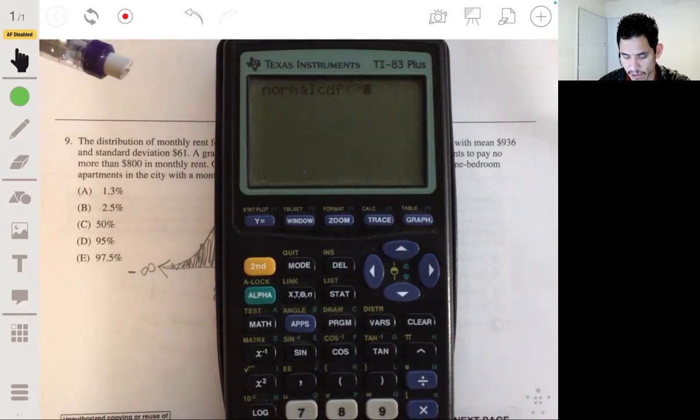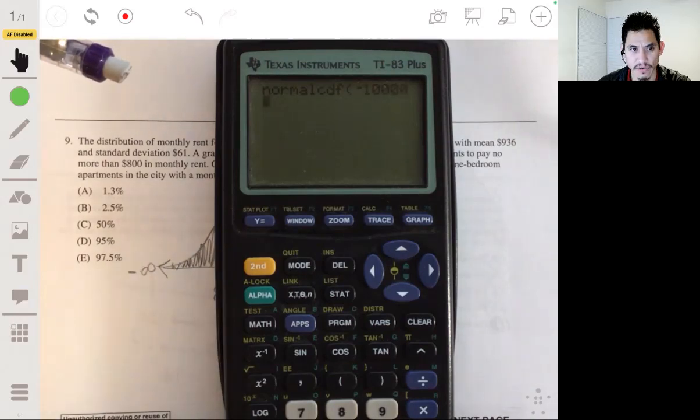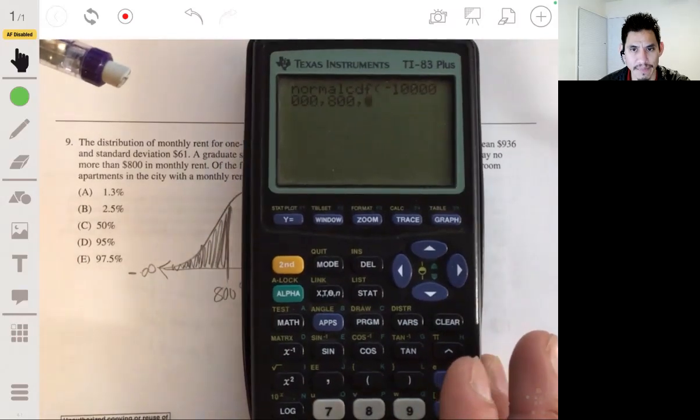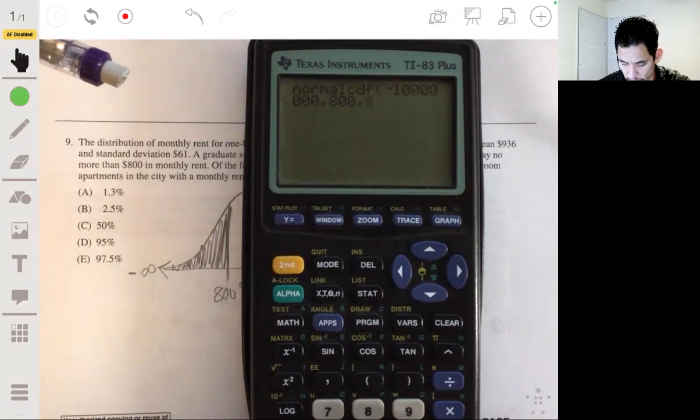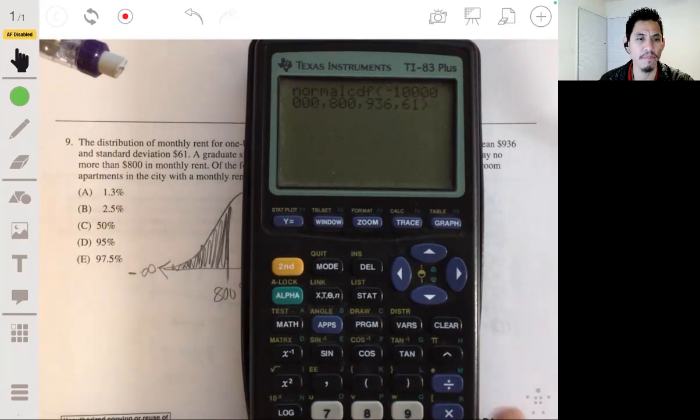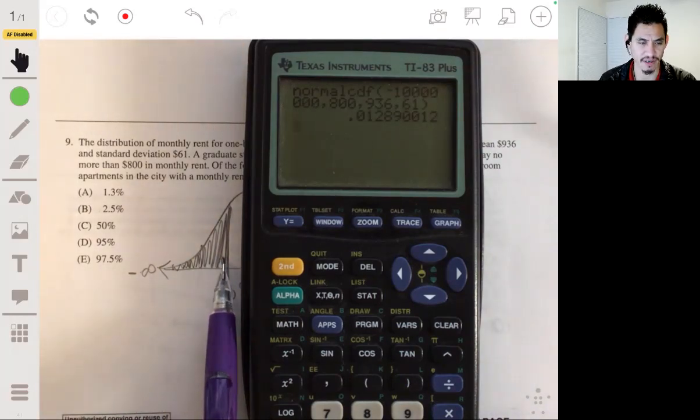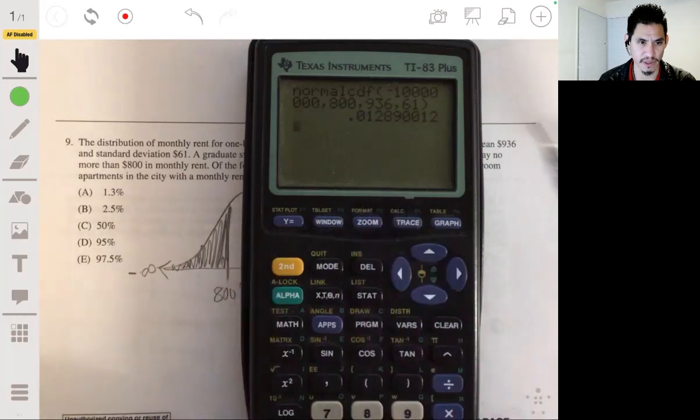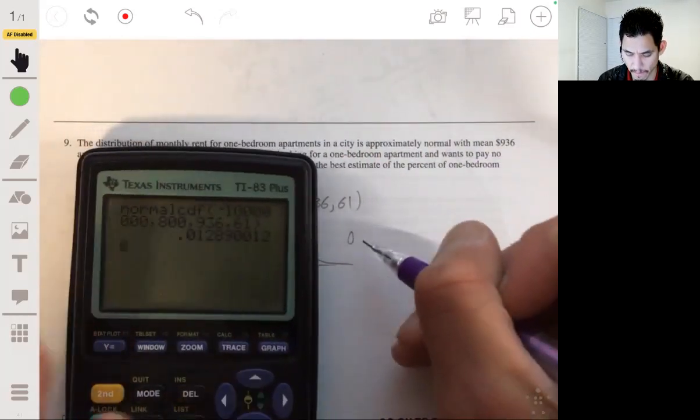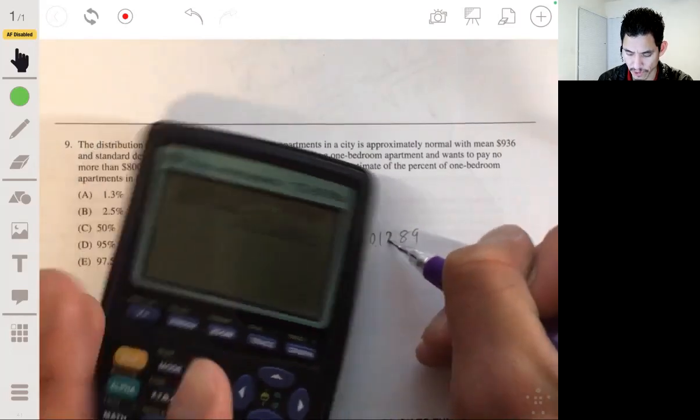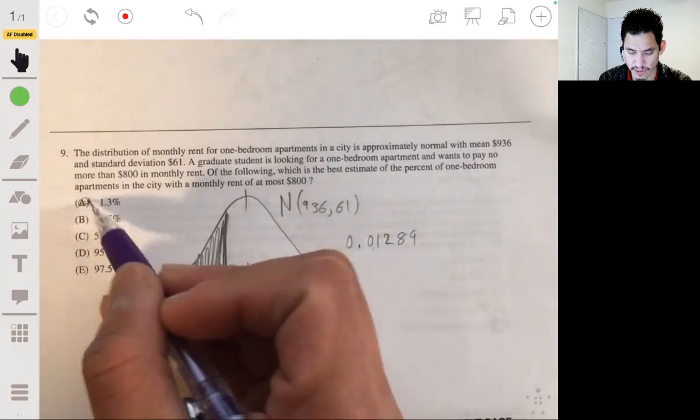The syntax will be the lower bound. In this case, a negative infinity. Please enter a very large negative number, comma, upper bound. We're going up to 800, comma, followed by the mean, which is 936, comma, followed by the standard deviation, 61. So this will give us our area or proportion. And it's not going to be, this is very poorly, this is not drawn to scale, but it's only about 1.289%. Or the closest answer will be 1.3%. So A.